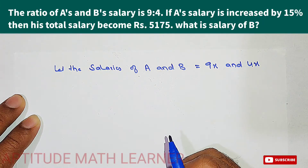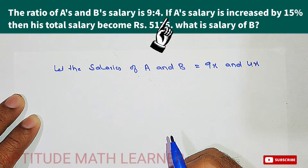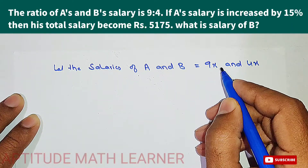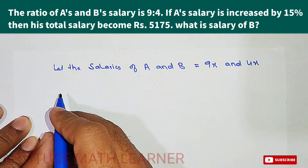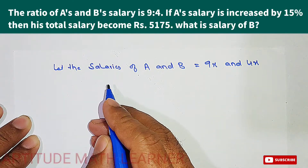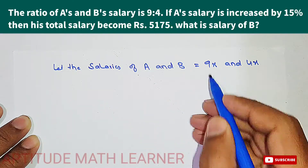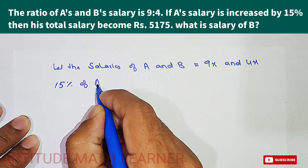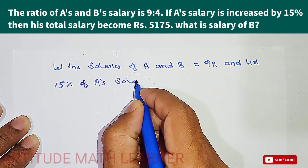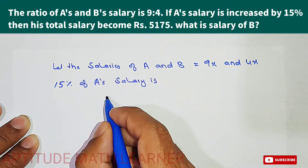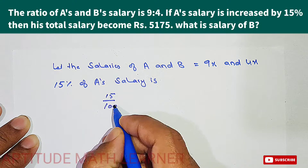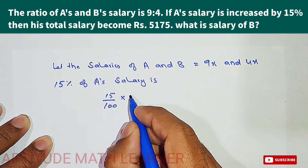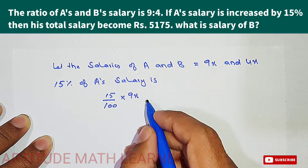Now in the question, it is saying that A's salary is increased by 15 percent. This is A's salary ratio and we have just taken 9x. So the first thing we have to do is find out 15 percent of 9x. So here that is 15 percent of A's salary.